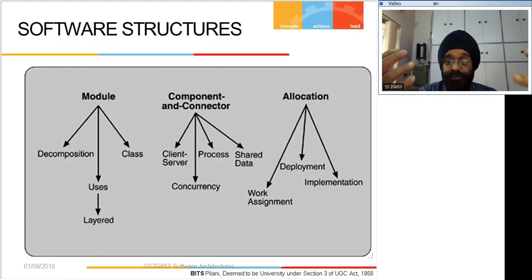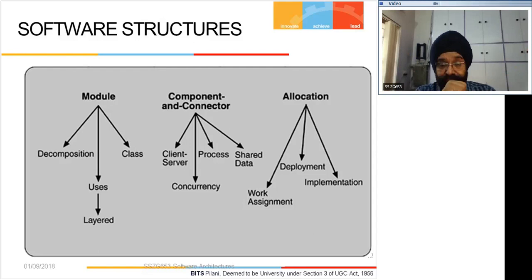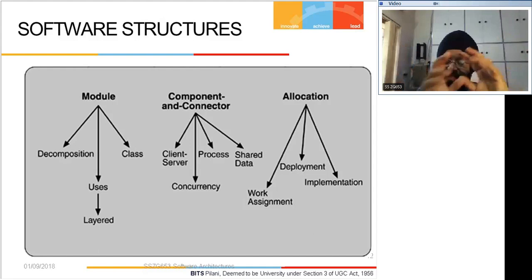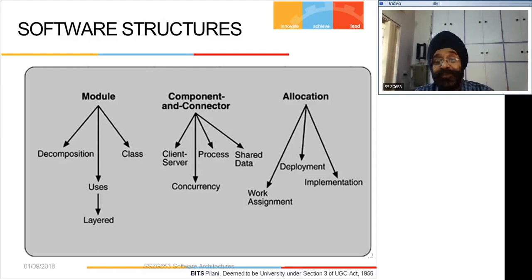An architect has to decide which views will give an adequate expression of the structure he has thought of. He thought of the structure because he had quality requirements and believes the structure will fulfill them. Once convinced the structure fulfills the quality requirements, he has to present it through views. There's a wide variety of views possible - it's just not three views - and later in today's session we'll talk about which views you should have.